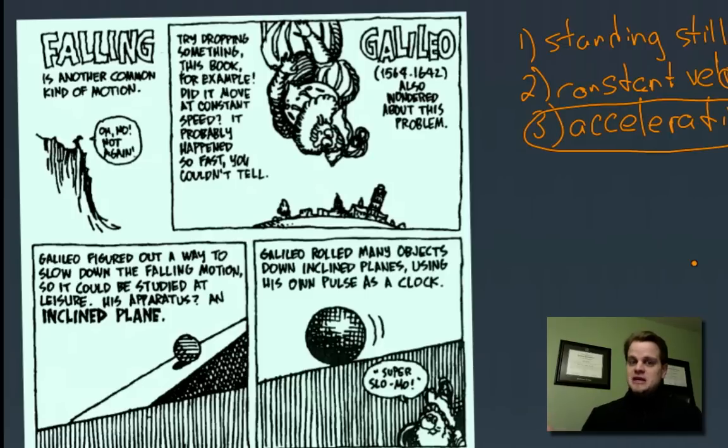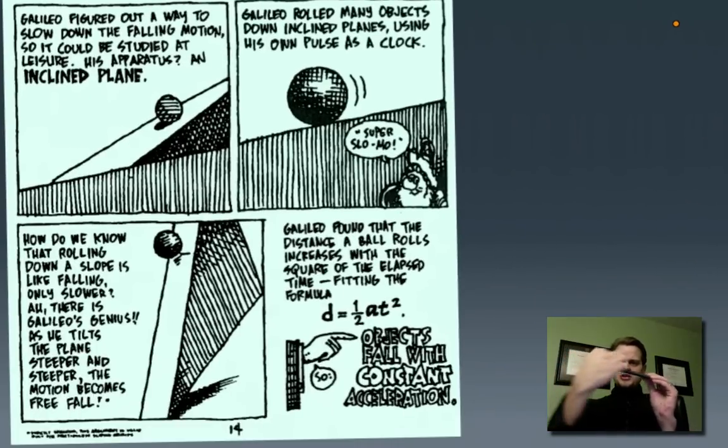And he did this many, many times. He rolled things down. In fact, he used his own pulse as a clock, which is quite impressive. And so the idea is that if you have a ball rolling down an inclined plane, the steeper the plane, the closer it is to actual gravity's acceleration. So if you just keep tilting it, eventually, it's vertical, and it's not actually rolling down. So that is free fall.